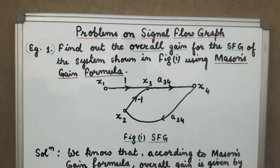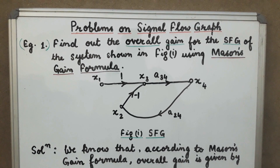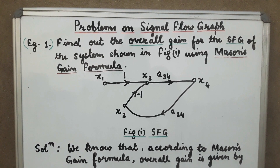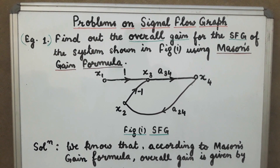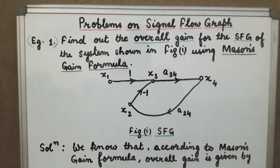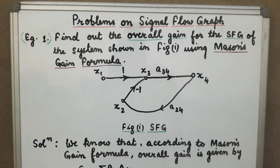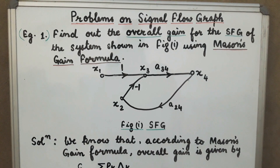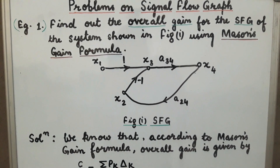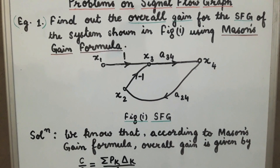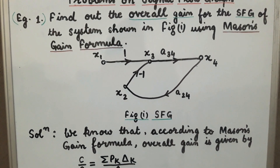Hello everyone, welcome to the Signal Systems class. In the previous class we discussed Mason's gain formula for finding the overall gain of a given signal flow graph. In today's class we will take an example and see how we can apply Mason's gain formula to find the overall gain of this signal flow graph, as shown in figure 1.